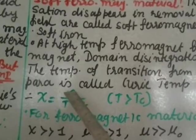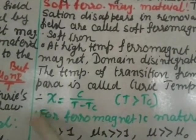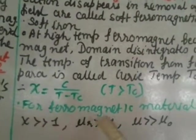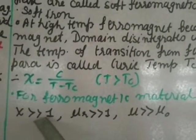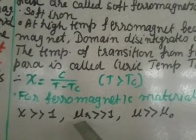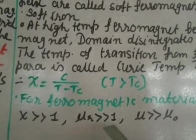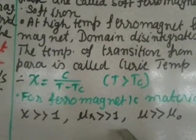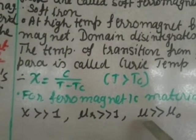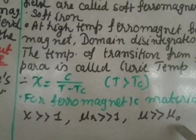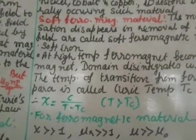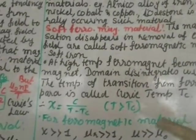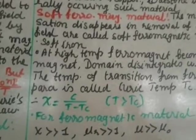In this formula, C is the Curie constant and χ is the susceptibility. For ferromagnetic substances, χ is very much greater than one. The relative permeability μr is also very much greater than one, and μ is very much greater than μ-naught.